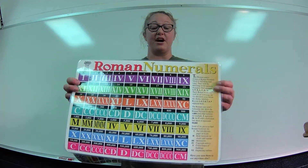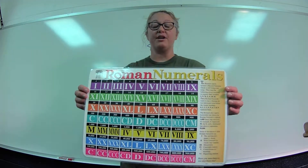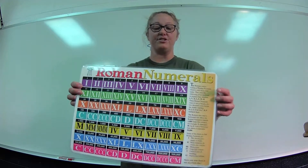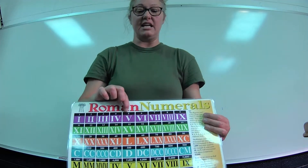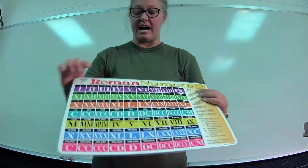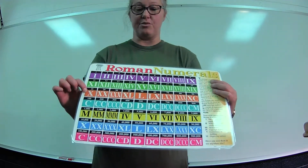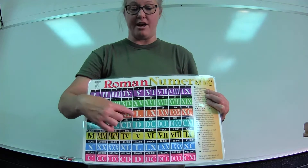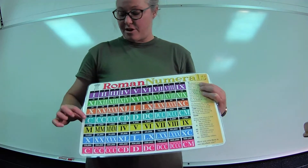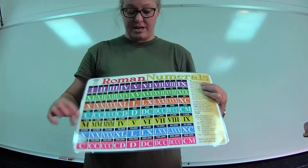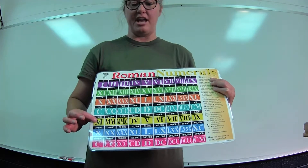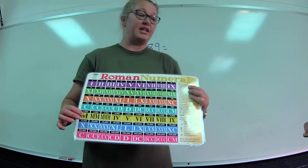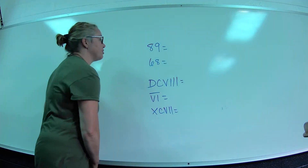These are Roman numerals — we normally write in Arabic numbers, but let's go over them again. I equals 1, V equals 5, X equals 10, L equals 50, C equals 100, D equals 500, and M equals 1,000.